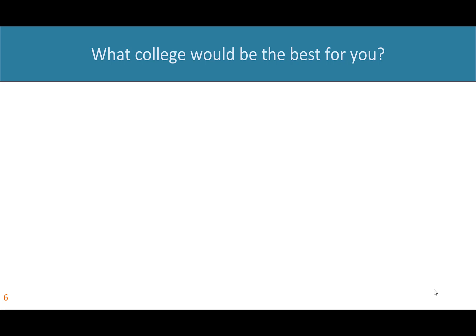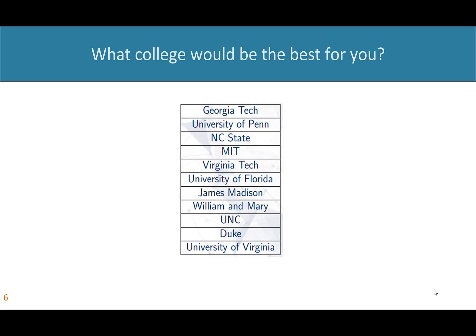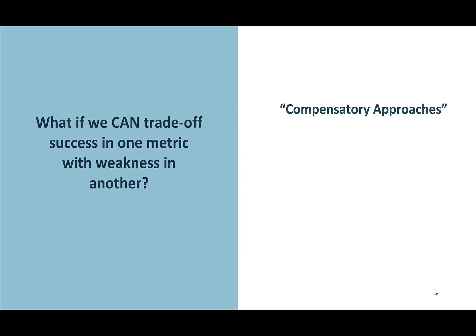We're going to take an all too familiar example, which is figuring out which college would be the best for you. This approach is in a category called compensatory approaches, because it allows you to trade off success in one metric for weakness in another — like maybe this school has better academics, but it also costs more.